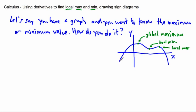This graph doesn't really have a global minimum just because it goes down forever — unless you decide to look from a certain region. Maybe from x equals zero to some value way over here. Then the global maximum is still this point, but the global minimum would be whatever value is way down there. So it can have a global minimum if you have a specific region you're looking at.